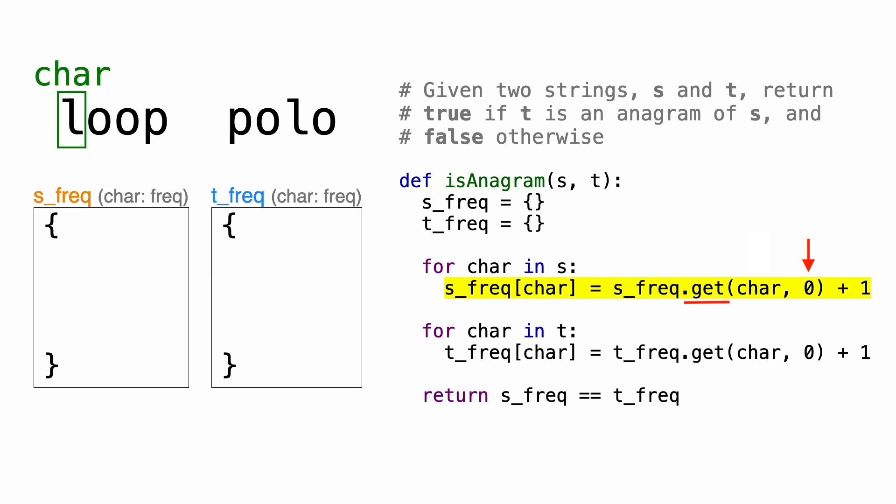So right now, since the dictionary is empty, the key of l doesn't exist, so this part will return zero. Then we add one to increment that value, so zero plus one equals one. So now we have a value of one, which we're then going to assign to the key of char, which is again l. So in the s-frequency dictionary, we're going to create a key of l which corresponds to a value of one. This means that we have seen the letter l one time.